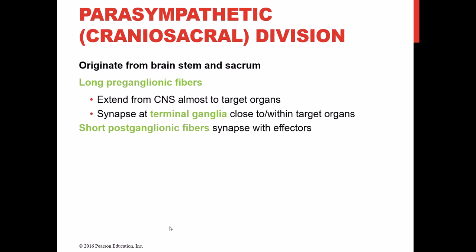The parasympathetic division is also called the craniosacral division, referring to the origin of its pre-ganglionic neurons. For the parasympathetic system, neurons originate at the brain stem and the sacral part of the spinal cord. They have very long pre-ganglionic fibers that extend almost all the way to the target organ. The ganglia are called terminal ganglia because they're very close to or even within the target organ. Since pre-ganglionic fibers are long, post-ganglionic fibers are very short.